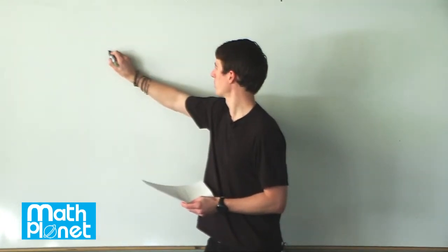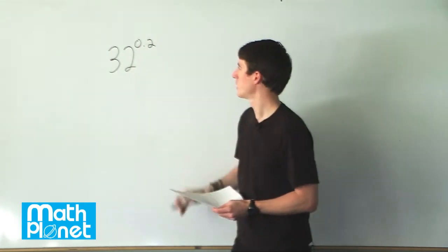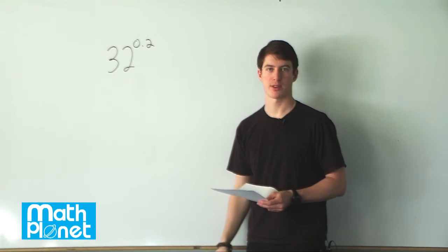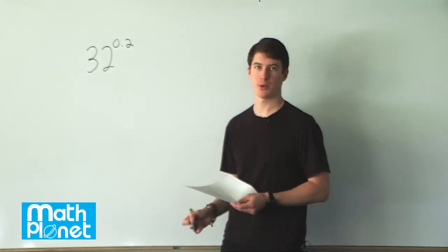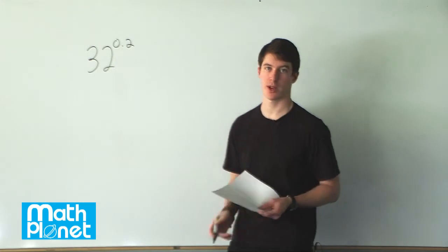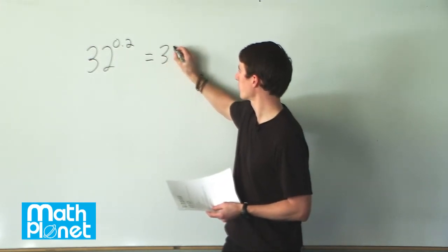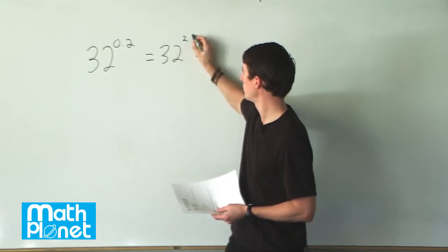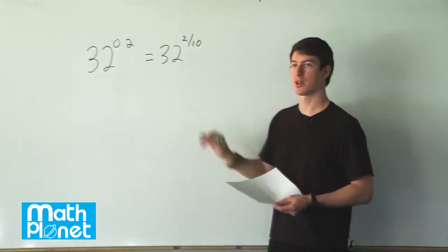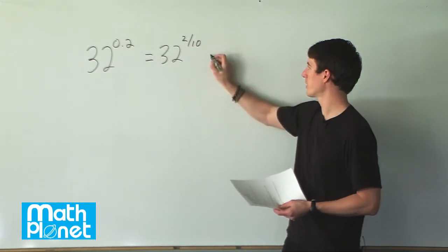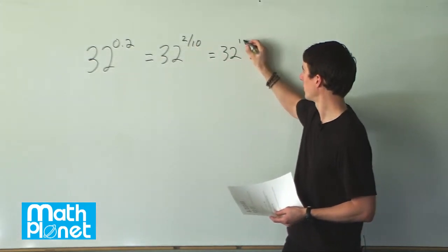The first one is 32 to the power of 0.2. That's not something we can solve right away, but we can rewrite this 0.2 as a fraction, which is more common when we're talking about indices. So we can write this as the same base, 32 to the power of 2 tenths. We can already simplify this to 32 to the power of 1 fifth.